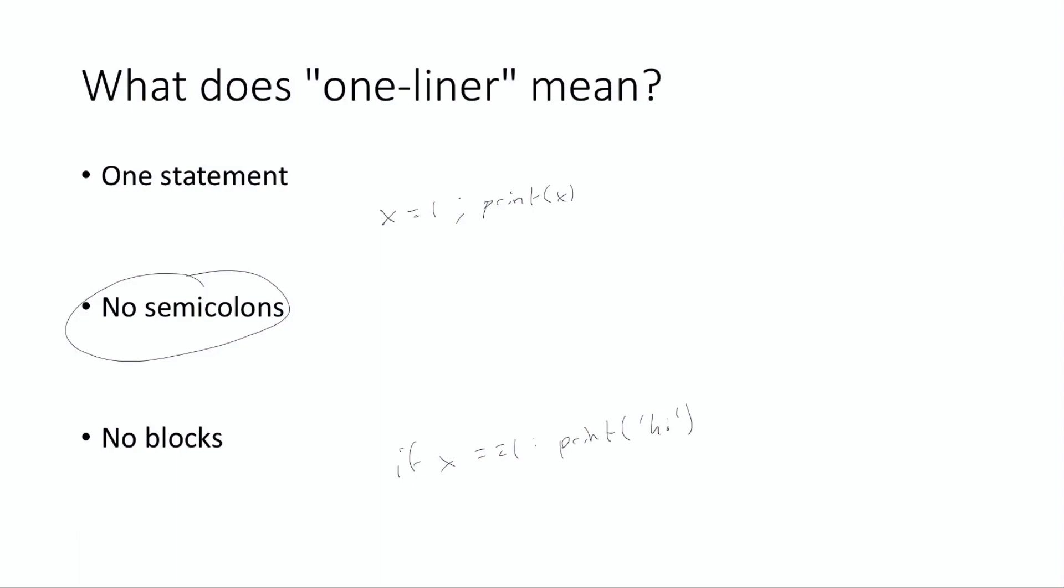When I say one-liner I really mean one statement. The if, although it's called an if statement, really is a block of code so we're not going to count that either. If you can write code in one line with no semicolons and no blocks, that's basically my definition of a one-liner for the purposes of this.